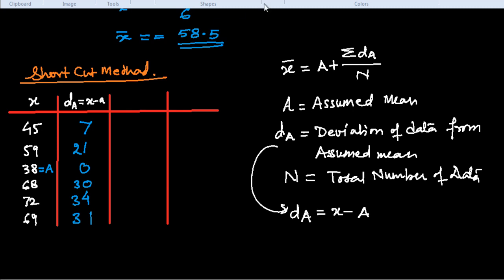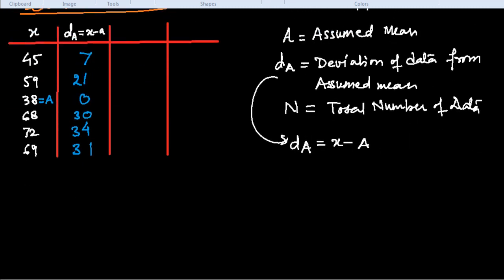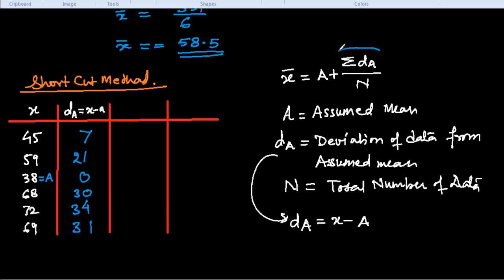So this we have got here. What we have to do, first we have to find out the summation of this dA. You look at in this formula, the summation of dA we have to find out. So we have to make the summation of this: summation of dA. We get here 7 + 21 + 30 + 34 + 31. The summation is 123.